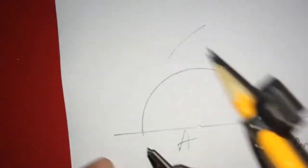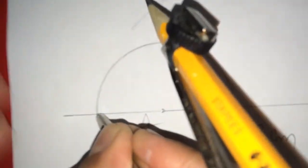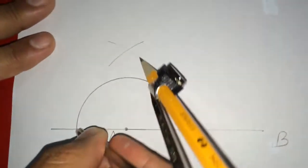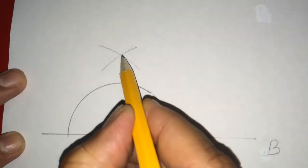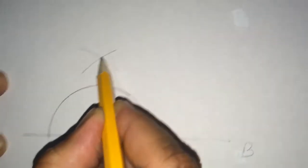And lift it up. This time, this point as center, draw another arc. So, these two arcs are intersecting at this point.